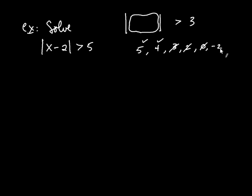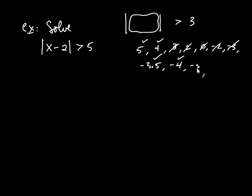How about negative 2? No, because the absolute value of negative 2 is 2, which is not greater than 3. And negative 3 is a no again. But what if we have like negative 3.5? The absolute value of negative 3.5 is 3.5, and that is greater than 3 — so it's a yes on negative 3.5. And it's a yes on negative 4, and a yes on negative 5, and so on. So this situation is just the opposite from the previous problem. Whatever is here, one of two things will work: anything greater than 3, or any number less than negative 3.